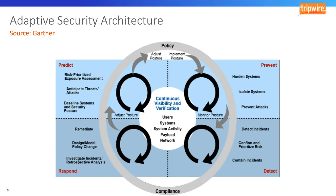Ideally, the prediction section is about anticipating what an attacker is going to do and feeding that information into your prevention strategy. For prevention, hardening is key — reducing the attack surface is what you're after. Prediction feeds prevention, even more so in a mature and complex environment. It also identifies how to detect, since you're limiting what the attack surface needs to be monitored. Knowing the attack surface helps limit what needs to be monitored, which improves detection rates.